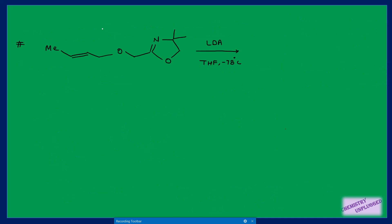For example, if a proton is removed from a position adjacent to an oxazoline ring, generating the carbanion, this becomes a [2,3]-sigmatropic shift system. The carbanion attacks, bonds shift accordingly. Here the carbanion is stabilized by the oxazoline ring and the alkene is E-alkene, so the major product will be the syn product.